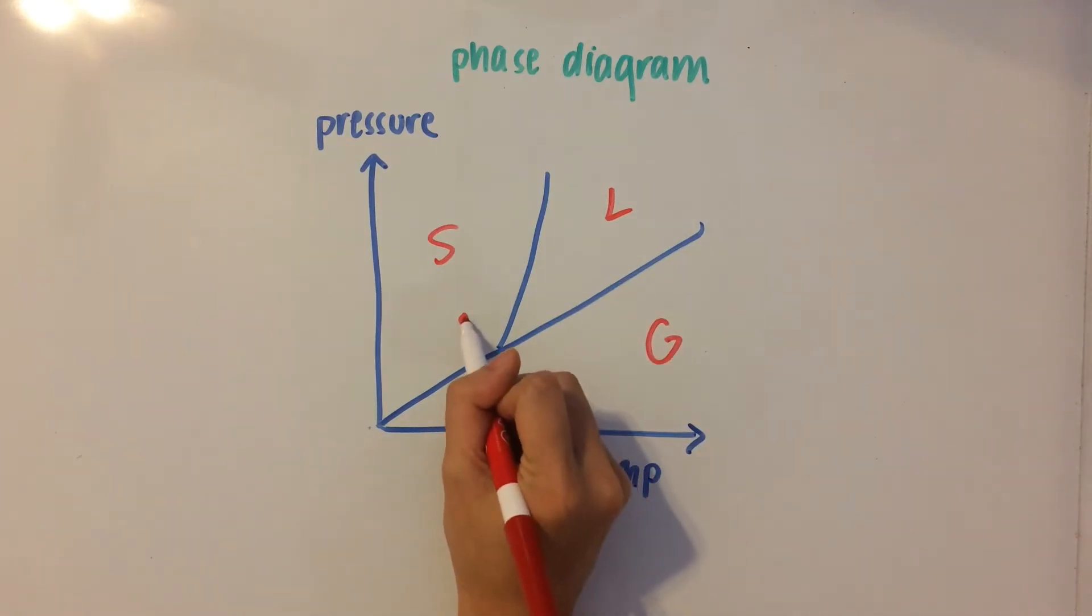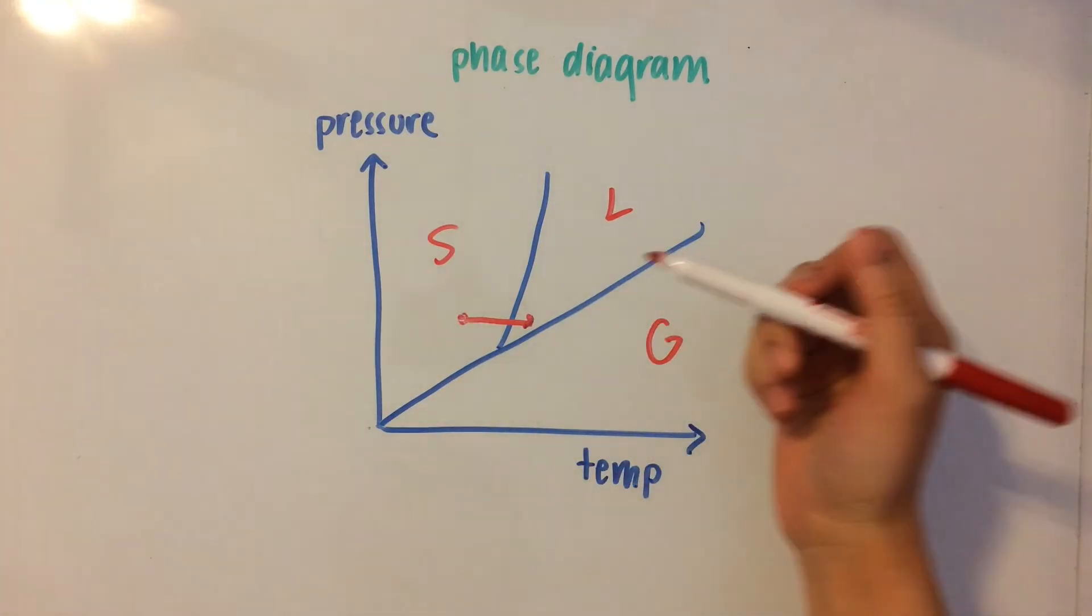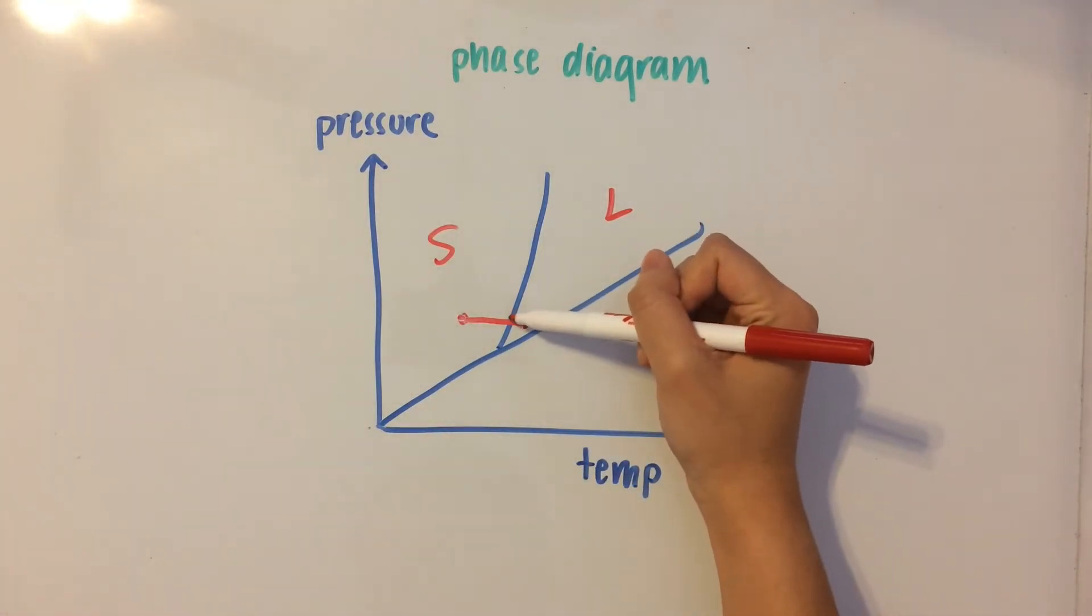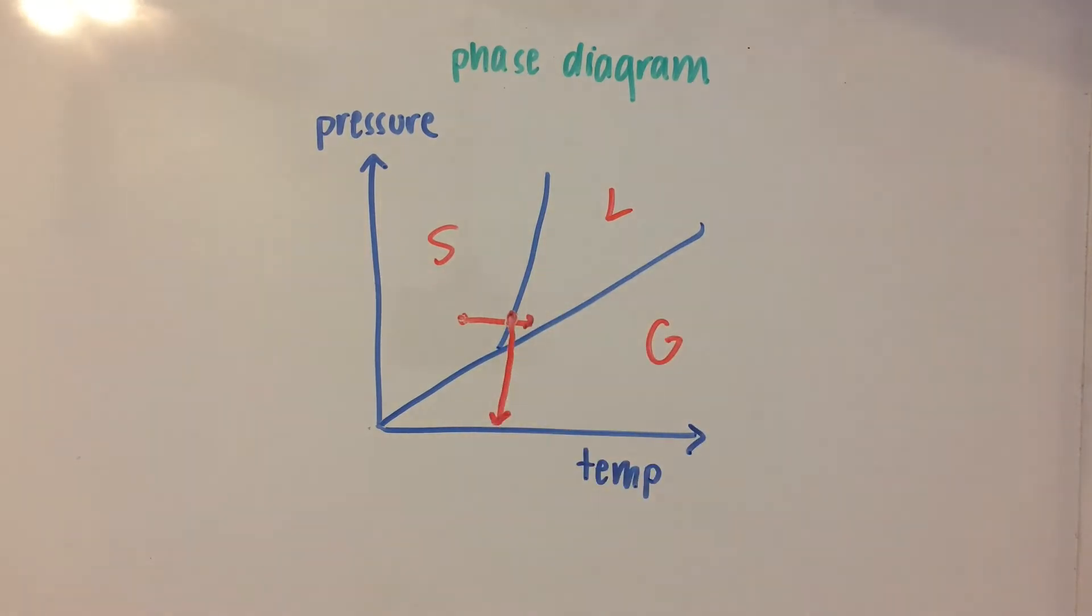So, what you do is go over to the right until you get to the liquid form, and so at this pressure, the temperature of the melting point would be right here. So, you would read it off as there.